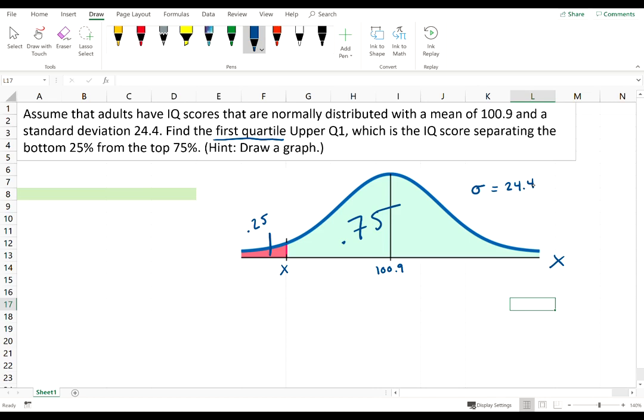So the Excel function for finding an X value, if you know the area to the left of that X value—the 0.25 is the area to the left—the function in Excel for this is the inverse of the normal distribution function.